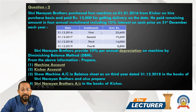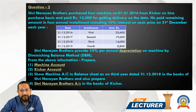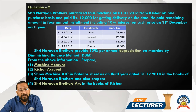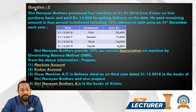Now, if you observe, the cash price is not given directly. But the installment amount and rate of interest are given. So to solve this question, you first need to find the cash price. You have to draw a reverse table and calculate the cash price from the installment details.